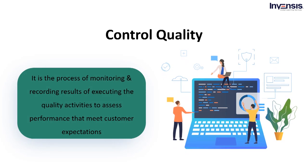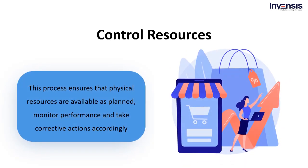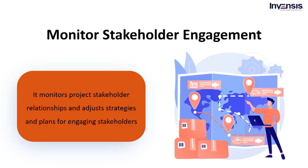The next process is control quality. Here, one must monitor and control the quality of all performed activities and measure its performance. This will ensure that the project outputs are up to the mark and meet the customer's expectations. It belongs to the quality management knowledge area. Then we have control resources, which ensures that physical resources are available as planned, monitoring performance and taking corrective action. It is performed throughout the project and belongs to the resource management knowledge area.